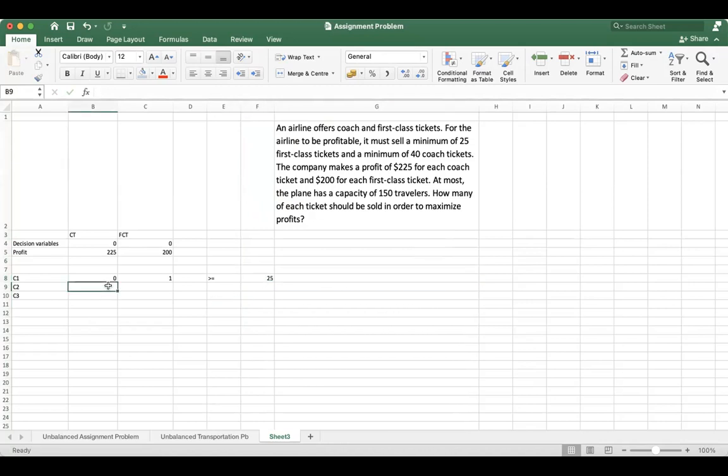Similarly for the second constraint equation, x should be greater than or equal to 40. And for the next constraint, x plus y equals 150. The total number of tickets available are 150 only, so one, one, and 150.